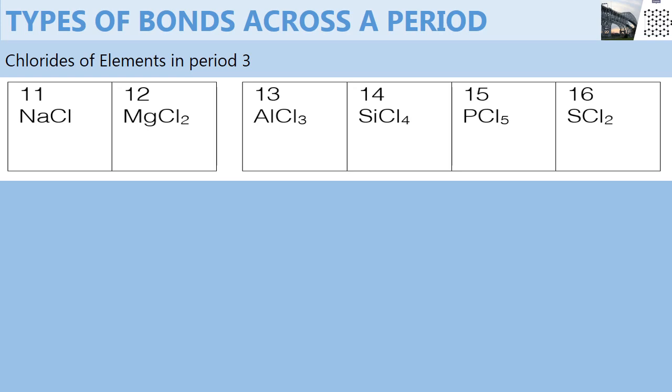Next, we are going to deal with the chlorides of elements in period 3. Just like for the oxides, the metals magnesium and sodium form ionic bonds with chlorine to form sodium chloride and magnesium chloride.